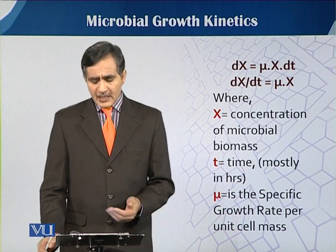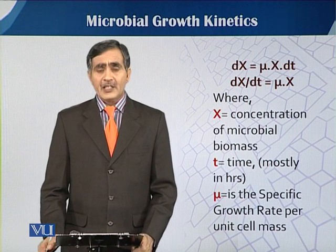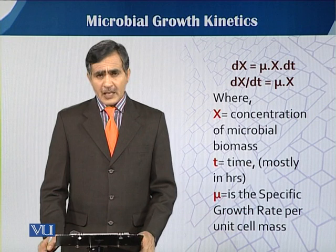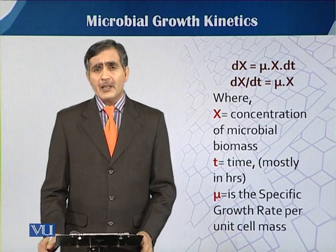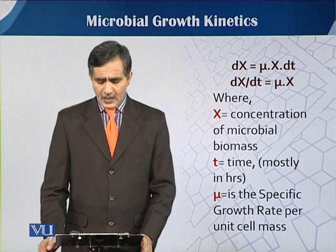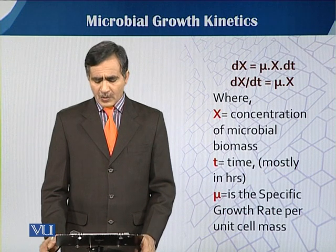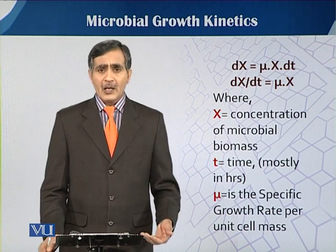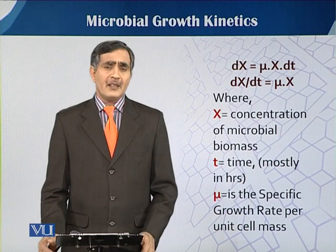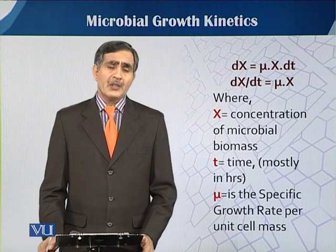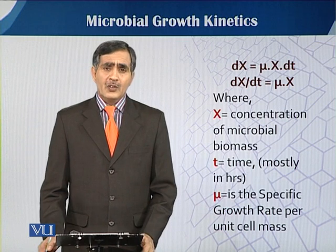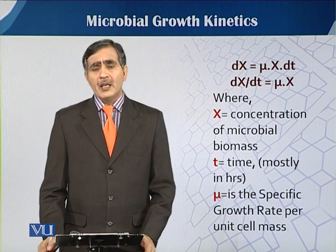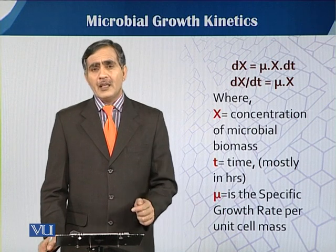Here, x is the concentration of microbial biomass, t is the time — mostly noted in hours — and μ is the specific growth rate per unit cell mass, expressed in grams, kilograms, milligrams, etc. So the specific growth rate describes how much cell mass is produced per unit time at unit scale.